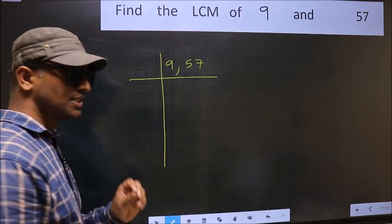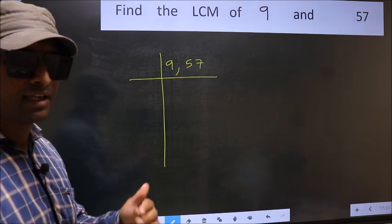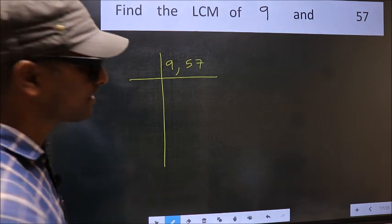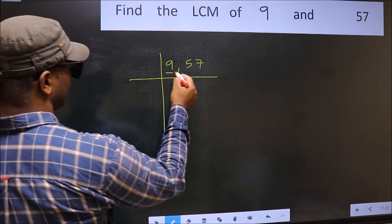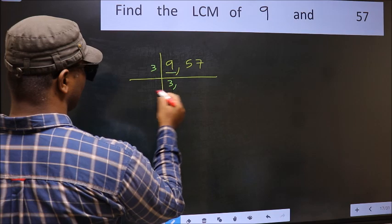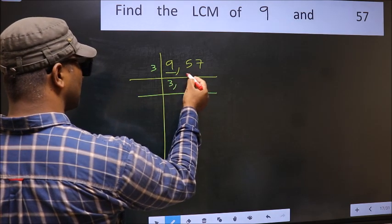This is your step 1. Now you should focus on the first number, which is 9 here. Now 9 is 3 times 3 is 9. The other number, 57.